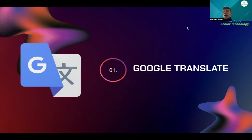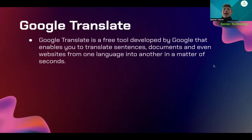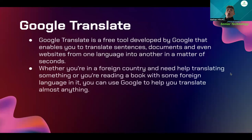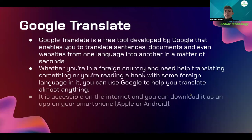Let's first dive into our first topic, Google Translate. Google Translate is a free tool developed by Google that enables you to translate sentences, documents, and even websites from one language into another in a matter of seconds. You're able to translate many different languages across the world — Chinese, Spanish, Italian, Russian, and any language. Whether you're in a foreign country or reading a book with some foreign language, you can use Google Translate to help you. It is accessible on the internet, and you can download it as an app on your smartphone, Apple or Android.